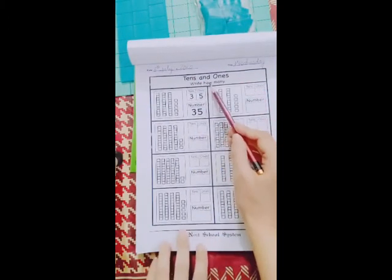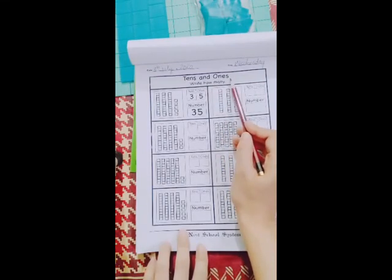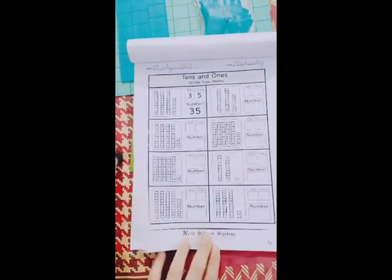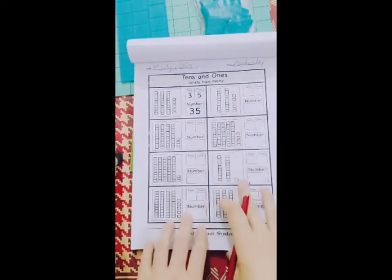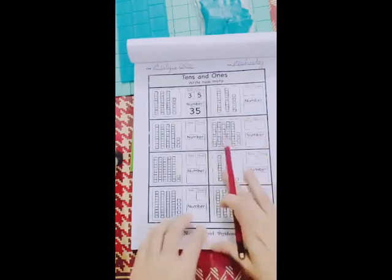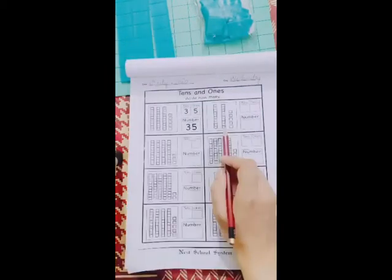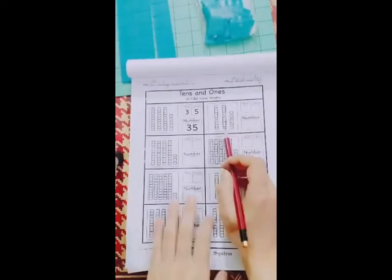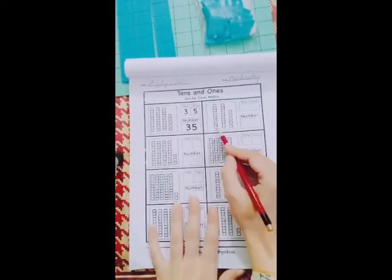Today we will learn about tens and ones and write how many tens and how many ones. Last lecture, I explained the concept of ones and tens. So you know very well. Here I have two sets, one and two.